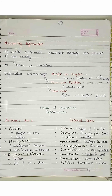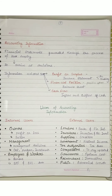I hope you understood this — this is called accounting information. So now we know accounting, and we also know accounting information. So now what about it — who will it be useful for? This will be helpful for the users of accounting information.